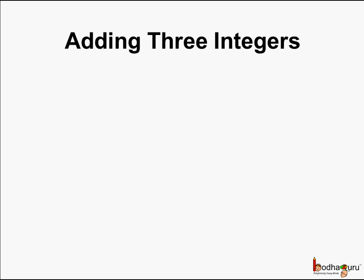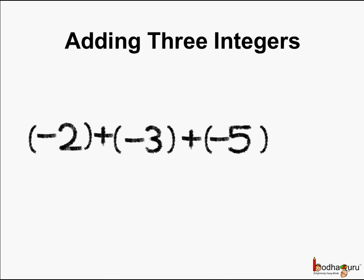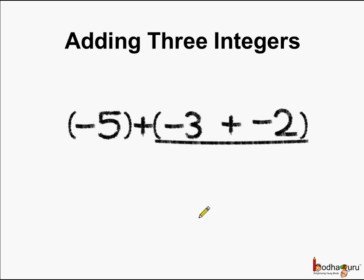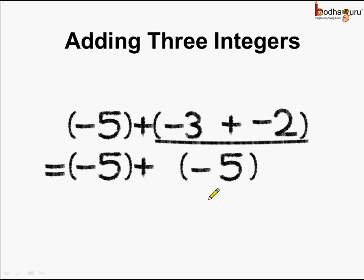Now let's try adding three integers: minus 2 plus minus 3 plus minus 5. First, let us try adding minus 3 and minus 2 first. So minus 3 plus minus 2 is equal to minus 5. Now we need to add minus 5 and minus 5, which is equal to minus 10. So the answer here is minus 10.